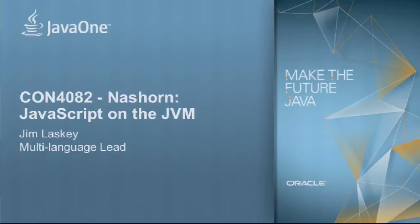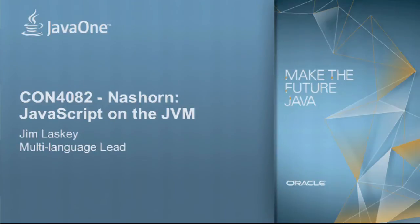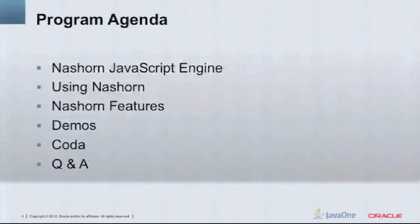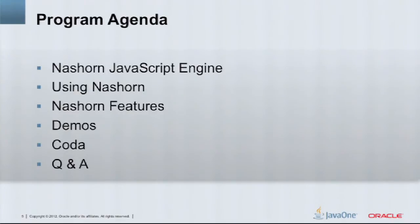This is the NASHORN session. My name is Jim Lasky. I'm the lead of the multi-language group in Java tools. This talk is going to be a little bit of background behind this project. With an existing language like JavaScript, there's not too much you can say that would be interesting, so I'm going to focus on specific things that NASHORN does that other versions of JavaScript don't do. I'll cover the engine itself, the history, how you would use NASHORN directly or as part of your Java code, features specific to NASHORN, a few demos, and final notes.